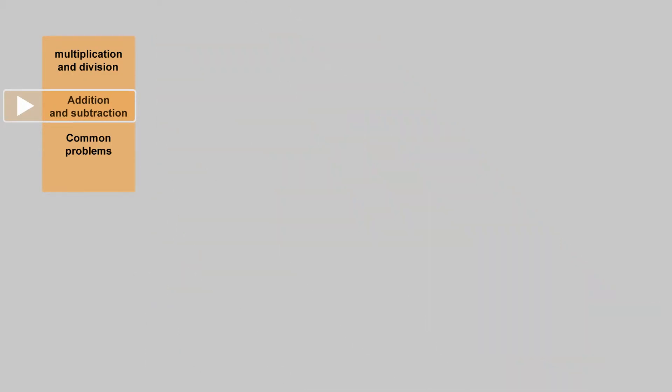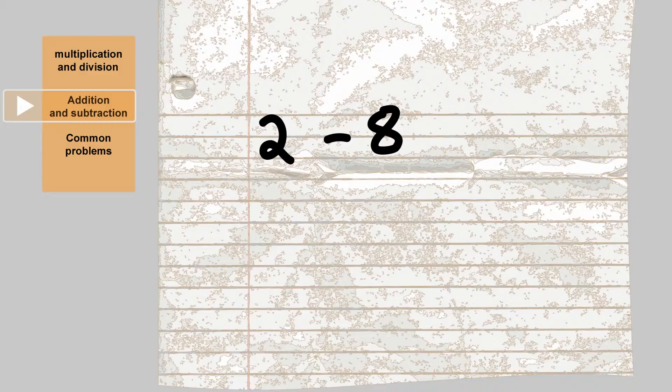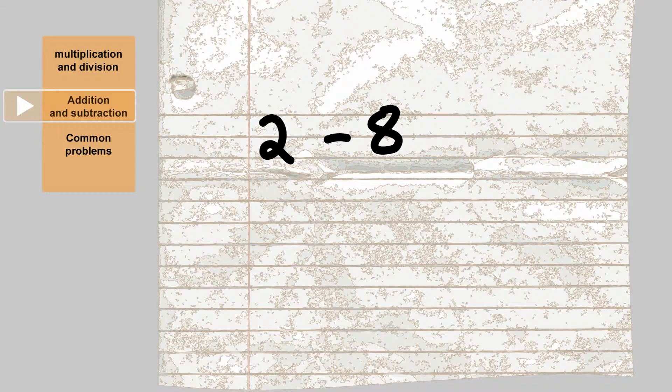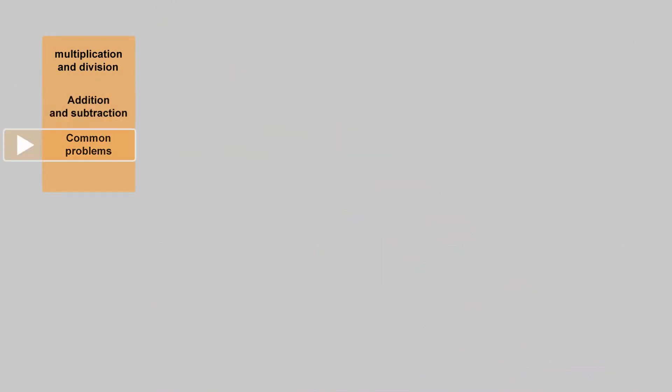Subtraction can cause some difficulty too, but this can be made easier by turning it into an addition problem. Take 2 minus 8. Turn the minus into a plus and add a negative sign to the right of it. The 8 is now the larger number. Subtract the smaller number from it and keep the sign. So 2 minus 8 equals minus 6.